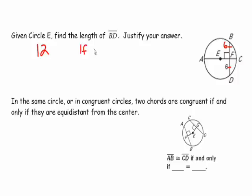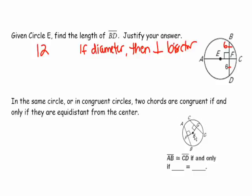Another theorem: in the same circle or congruent circles, two chords are congruent if and only if they are equidistant from the center. Chord AB is congruent to chord CD if and only if EF equals EG. Notice there's a right triangle formed here — distance is always the perpendicular distance from a point to a line, creating right angle opportunities and the possibility of using a radius to form right triangles.